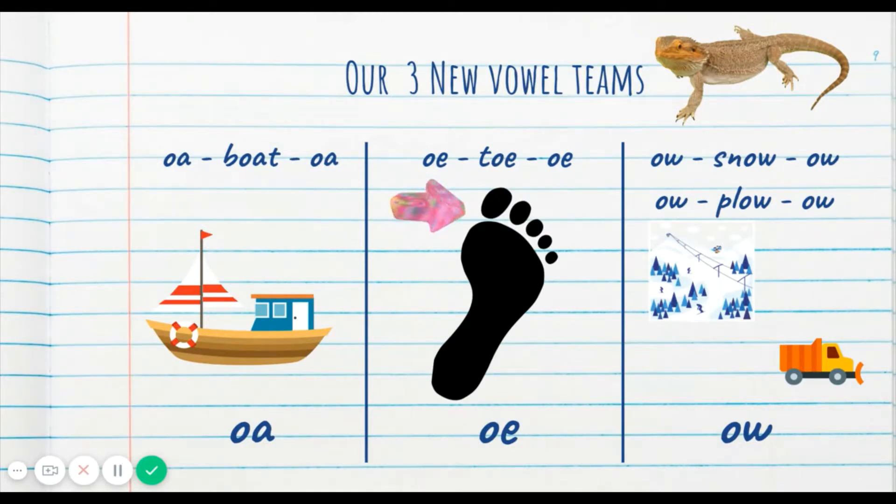So let's start with the first vowel team and do a little bit of practice. O-A boat, O, go. Good. O-E toe, O, go. Last two. O-W snow, O, go. Good. O-W plow, ow, go. All right. Not bad. Not bad at all.